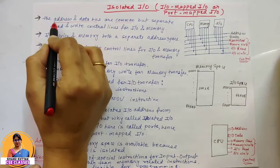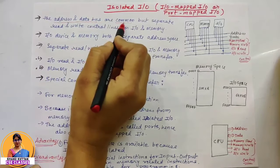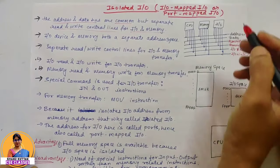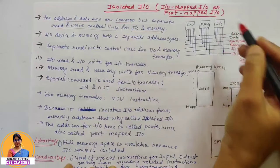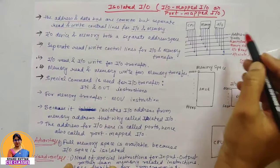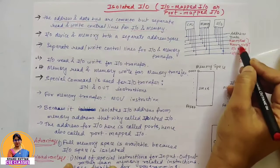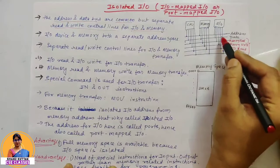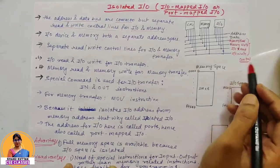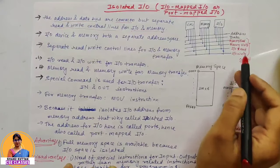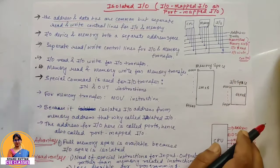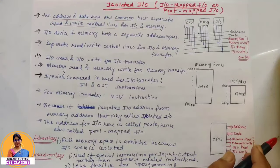So the address and data bus are common, but there are separate read-write control lines for I/O and memory. For I/O operations, there are I/O read and I/O write control lines; for memory operations, there are memory read and memory write control lines. Both have separate control lines. There is no common read-write control line. This is why we call it isolated I/O — because of the separate control lines.